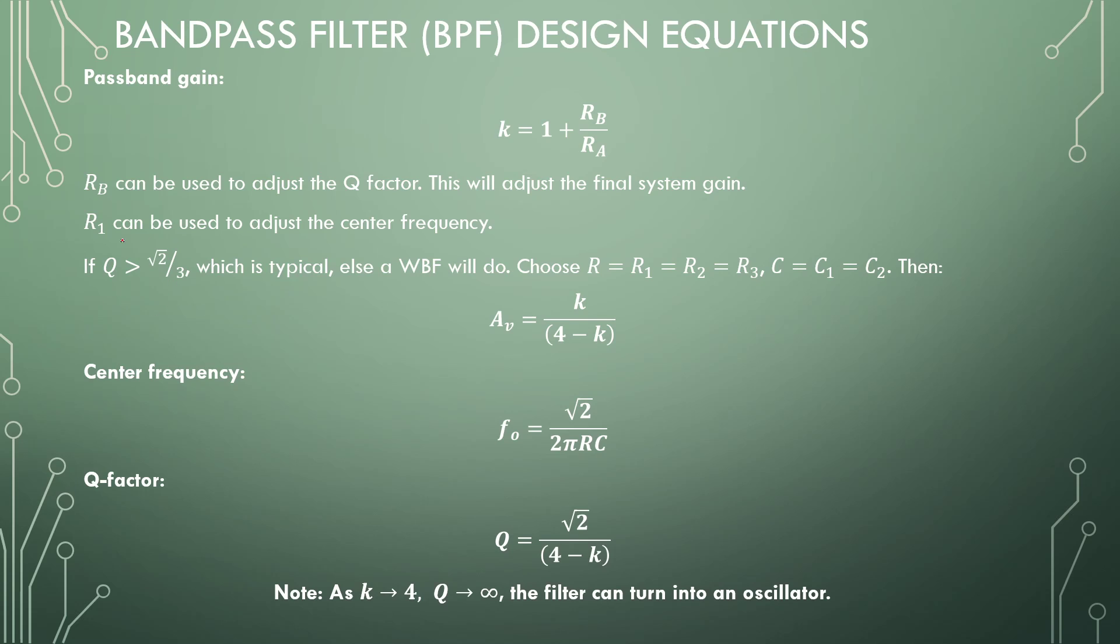So if our Q-factor is larger than the root of 2 divided by 3, and this is a typical case, or else you can just use a wideband filter, we can choose all our resistors to be the same value and all our capacitors to be the same value. Then, the final gain of your amplifier becomes K over 4 minus K.